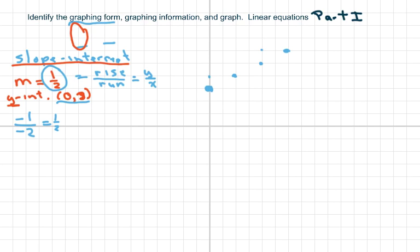I'll go down 1 from my y-intercept, down 1 over 2, down 1 over 2. Then you connect the disconnected dots. It's a little hard to write on this iPad, but there's your graph.